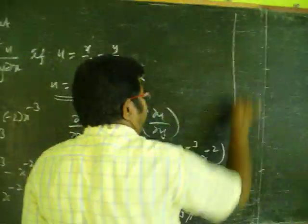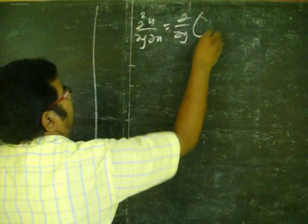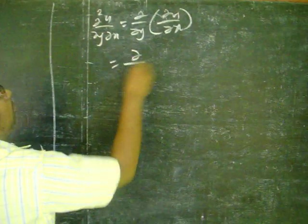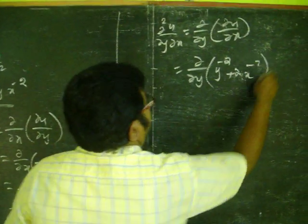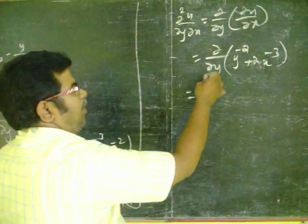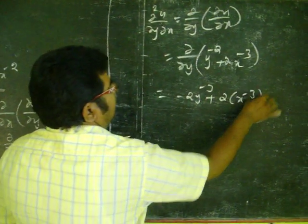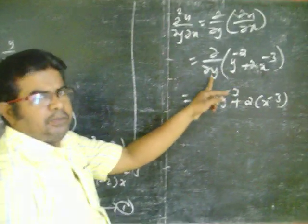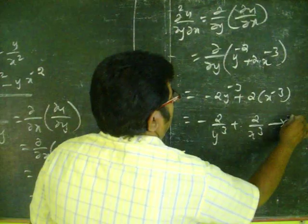Next, find the right-hand side: ∂²u/∂y∂x, which equals ∂/∂y of (∂u/∂x). We have ∂u/∂x = y⁻² + 2y·x⁻³. Taking the partial derivative with respect to y, treating x as a constant: derivative of y⁻² is minus 2·y⁻³, and 2·x⁻³ is a constant times derivative of y is 1. So the result is minus 2/y³ plus 2/x³. This is result (2).